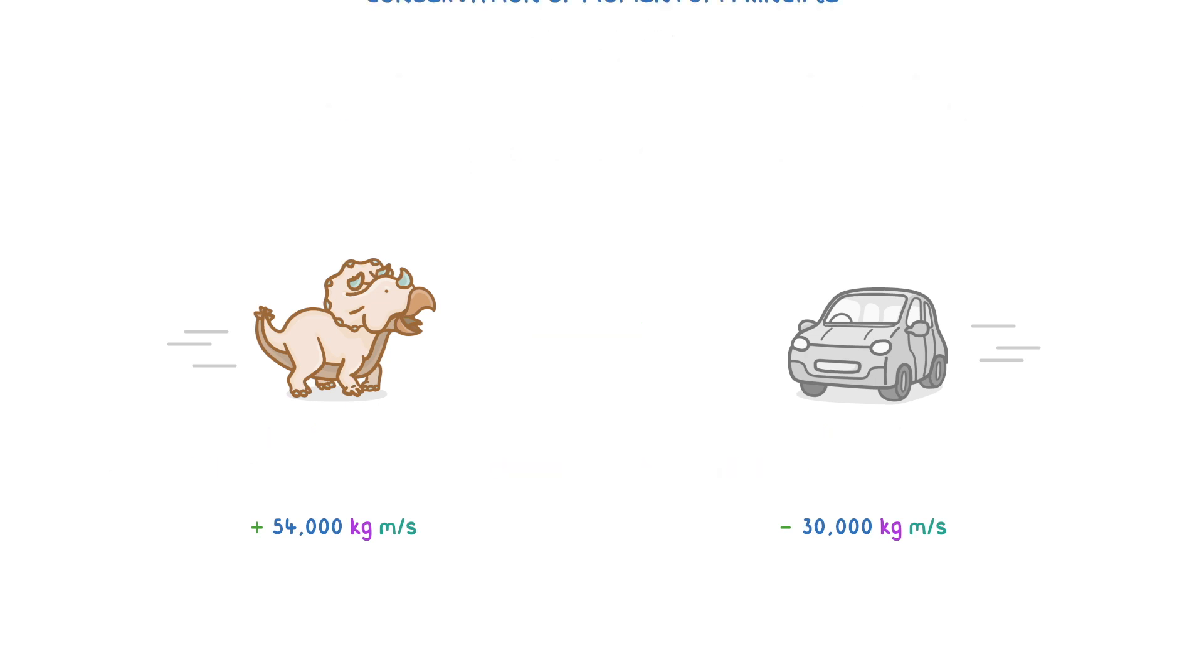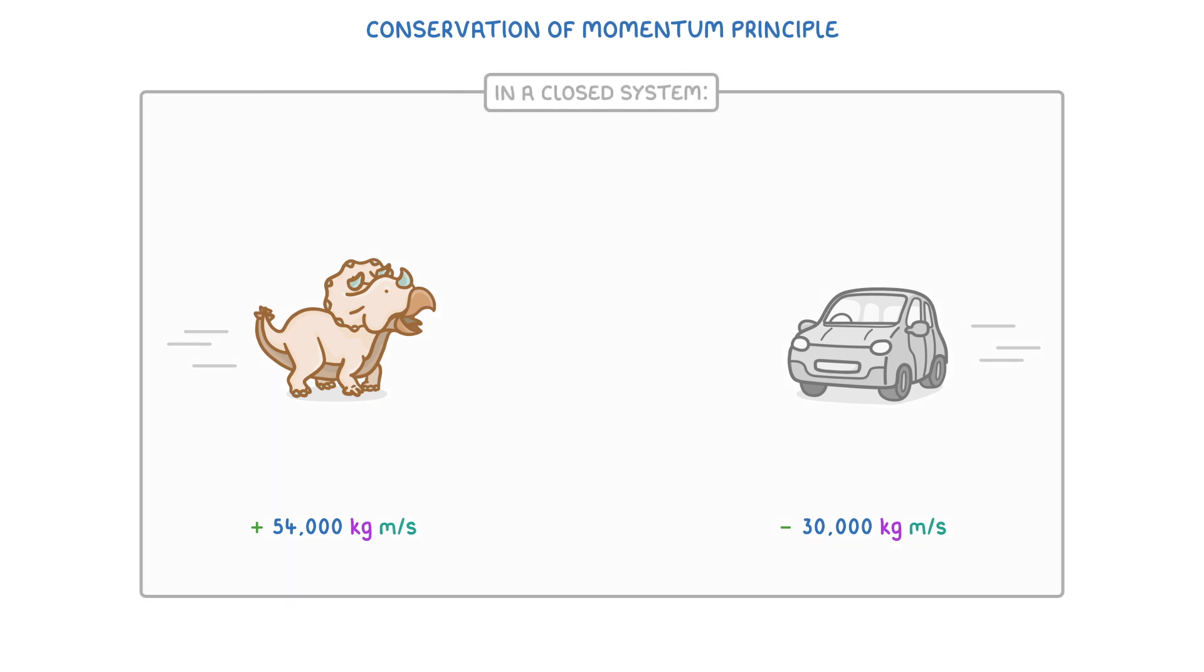The next thing to know is the conservation of momentum principle, which is the idea that in a closed system, the total momentum before an event, like a collision, is exactly the same as the total momentum after the event.